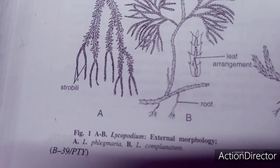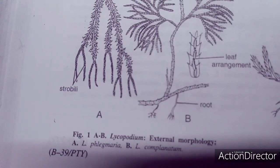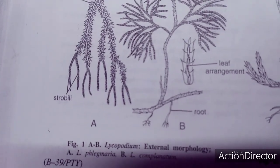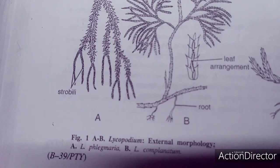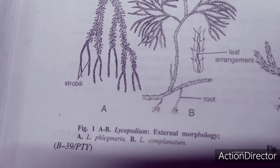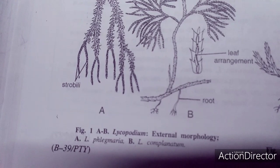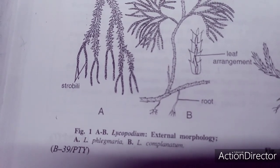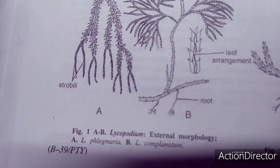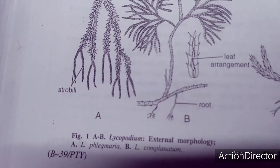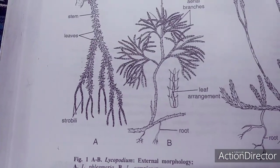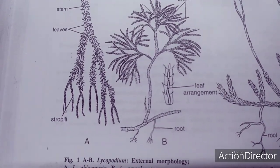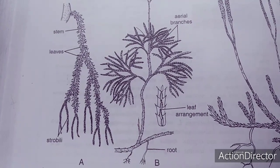The sporophyte plant body of Lycopodium is differentiated into root, stem, and leaf. There is great variation in form and habit among various species. Many species have been recorded from India — more than 10 species are recognized from India. Lycopodium clavatum has been recorded from the eastern Himalaya. Common names include club moss, trailing evergreen, and ground pine.